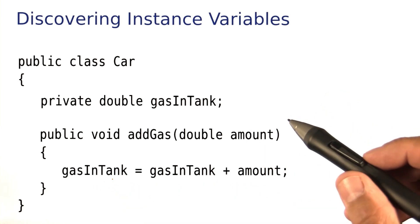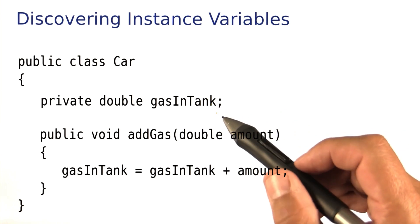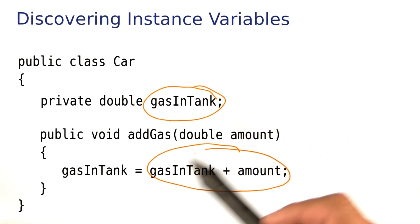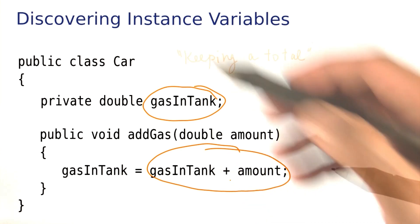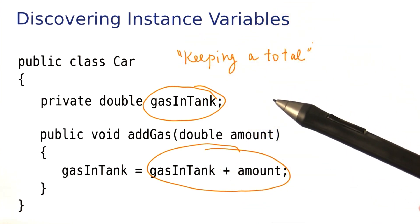Now, the point I want to make is there is a certain pattern here. You have a quantity. You make that quantity bigger. It also gets smaller when the car is driven. I like to call that pattern 'keeping a total,' and it occurs in many classes, not just the Car.